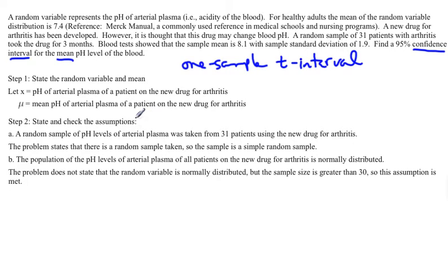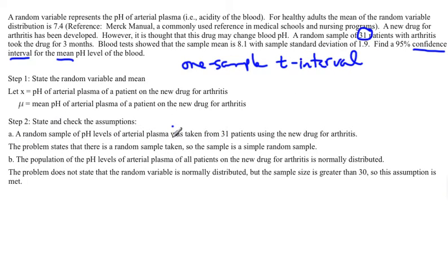The second step of a confidence interval is to state and check the assumptions. The first assumption of every T interval is that you have a random sample. We state it in terms of the problem: a random sample of pH levels of arterial plasma was taken from 31 patients using the new drug for arthritis. The problem does state that there was a random sample, so we can say that we had a random sample. We're good with that.